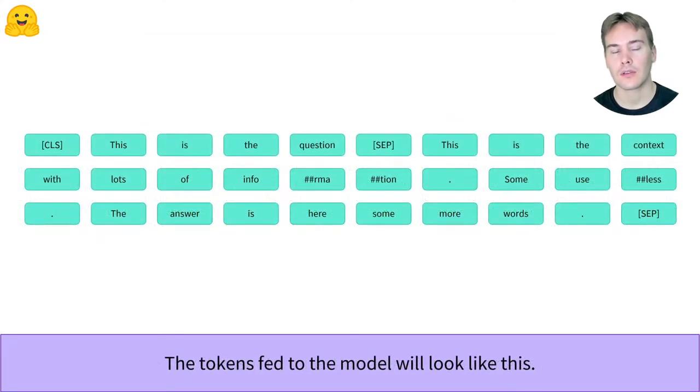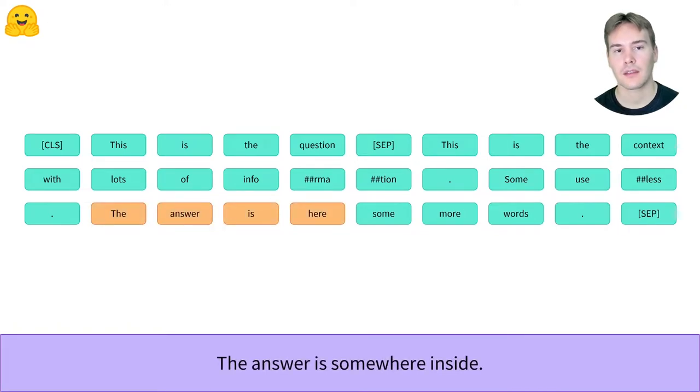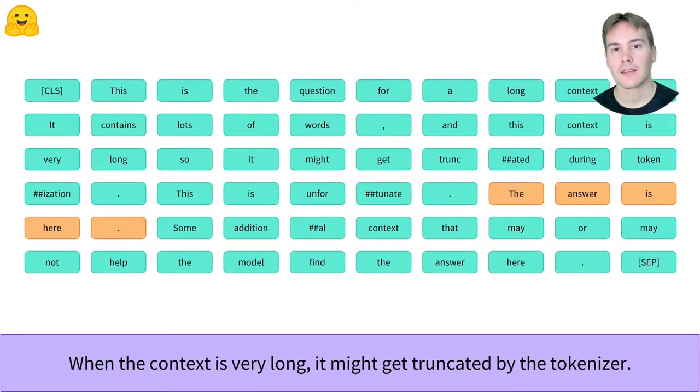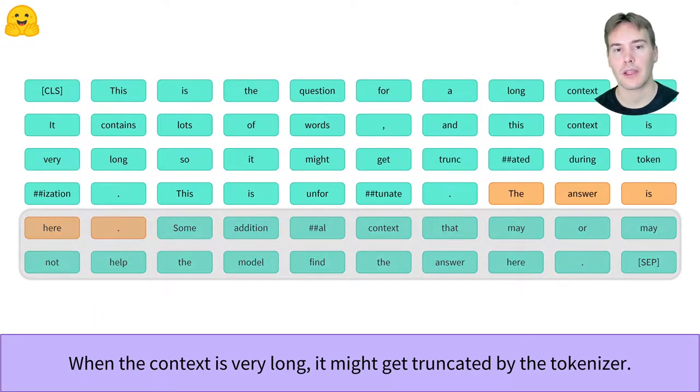Now if we have a look at the tokens we'll feed our model, we'll see the answer lies somewhere inside the context. For very long contexts, that answer may get truncated by the tokenizer. In this case, we won't have any proper labels for our model.